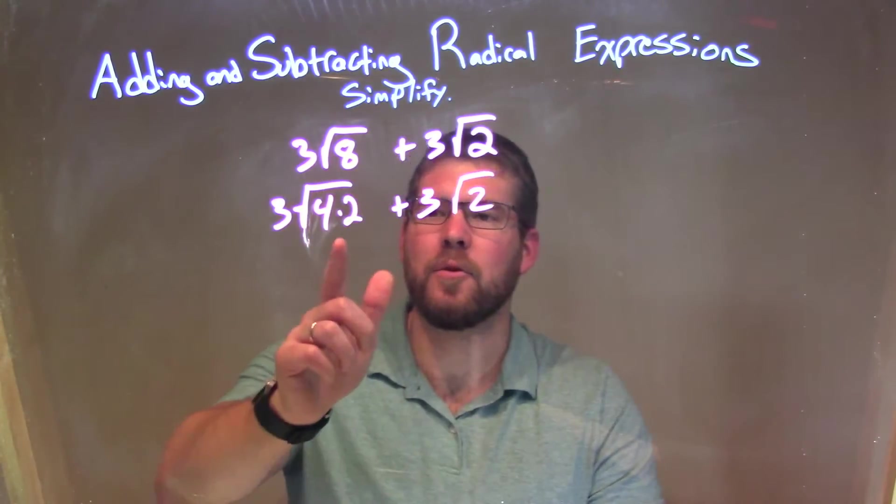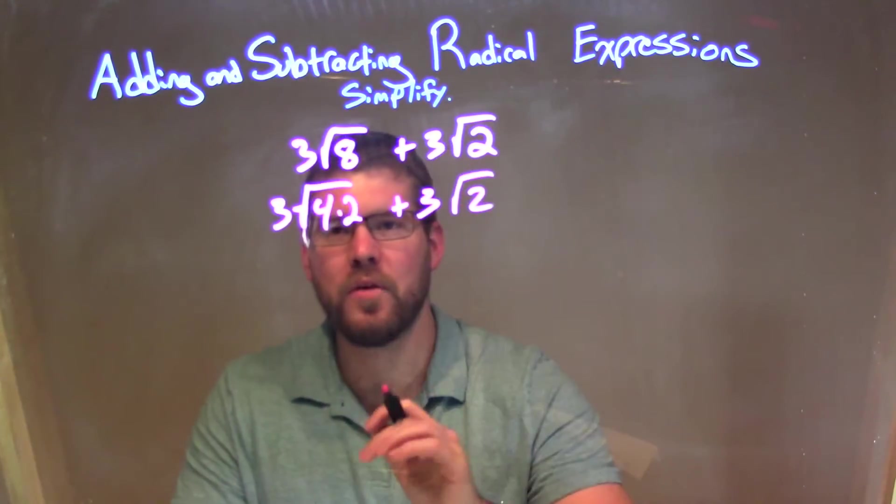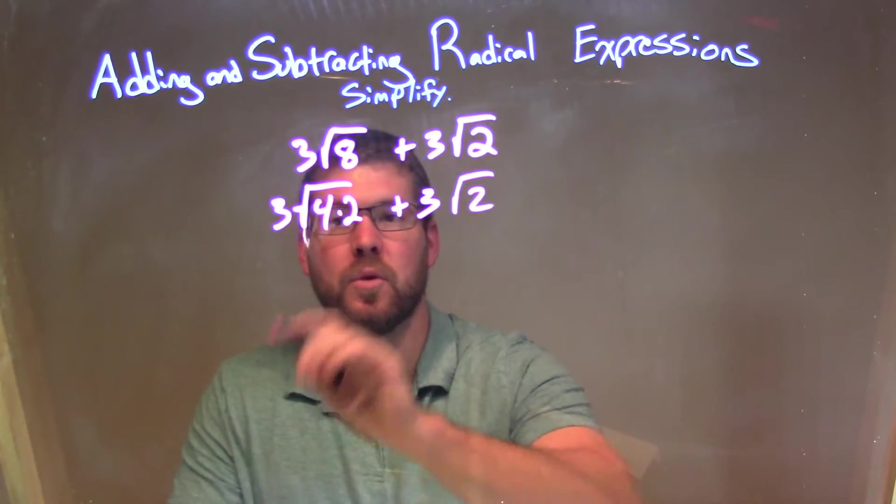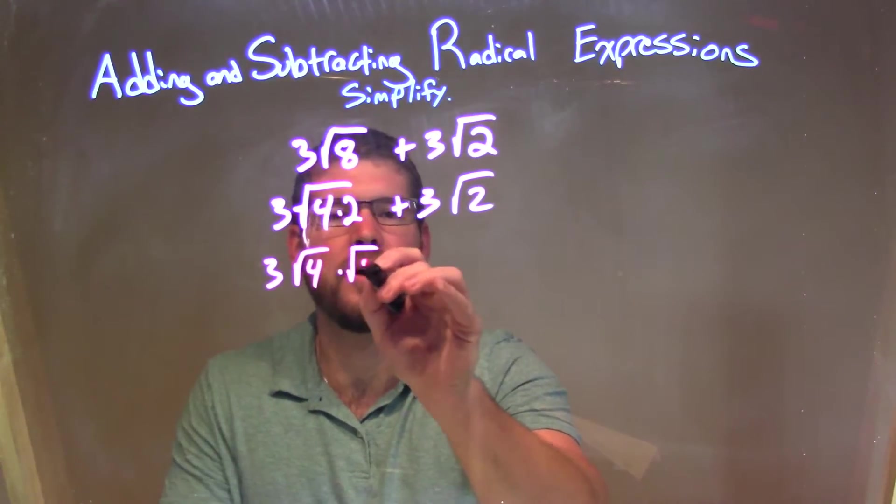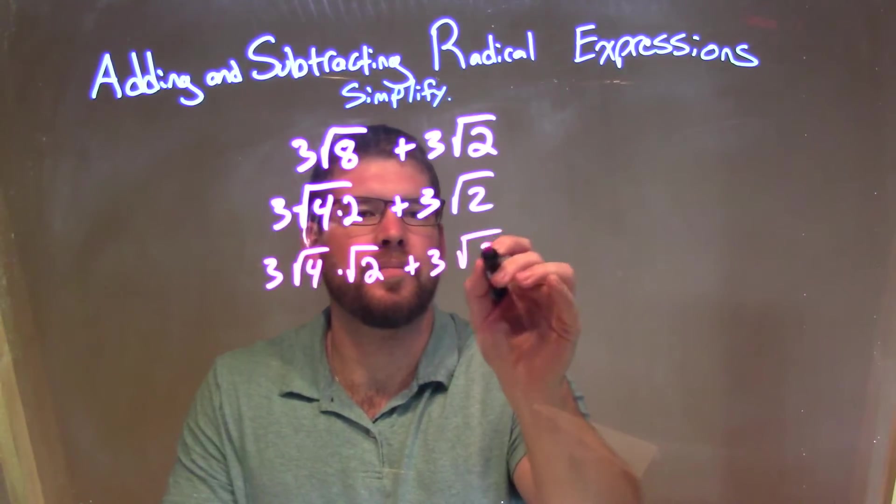Now that we have 4 times 2 inside the square root, I can break it apart and have both of them in their own individual square roots. So we have 3 square root of 4 times the square root of 2 plus 3 square root of 2.